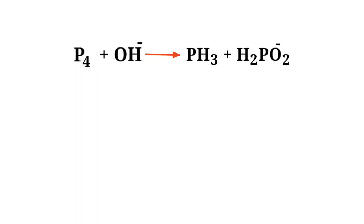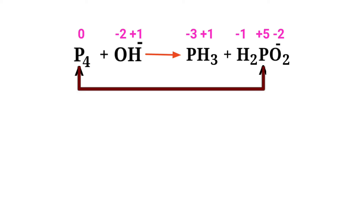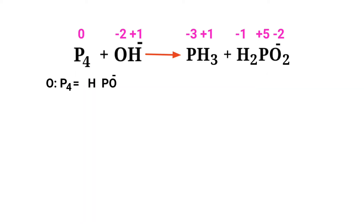First, figure out the reducing and oxidizing agents by the rules of assigning oxidation numbers. In the ion electron method, one reaction is divided into two half reactions. Phosphorus has a charge of zero changing to plus five in one reaction — it is being oxidized. In the other reaction, phosphorus has a charge of zero changing to minus three — it is being reduced.